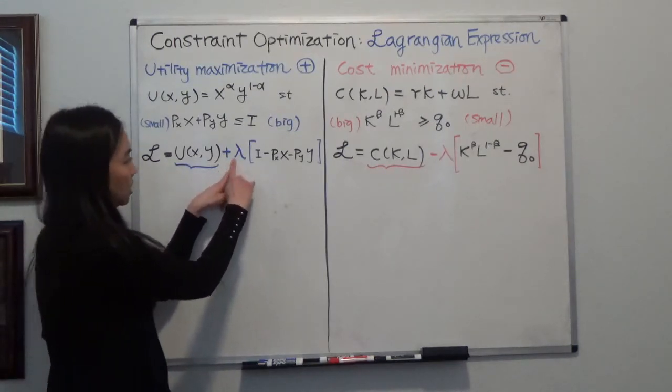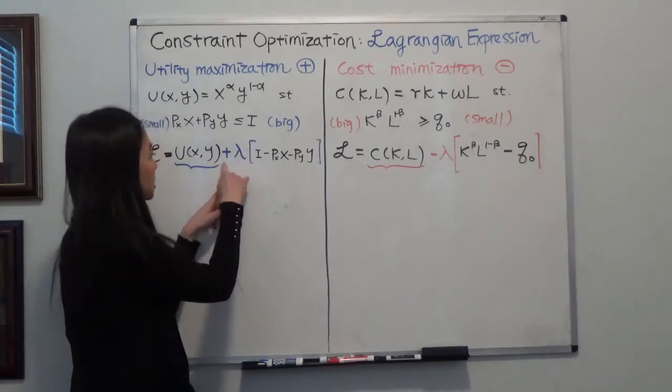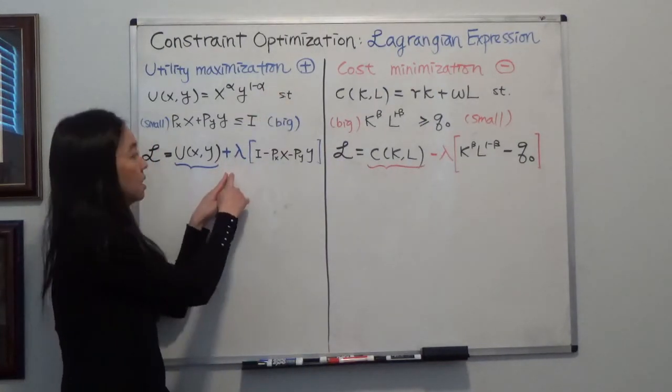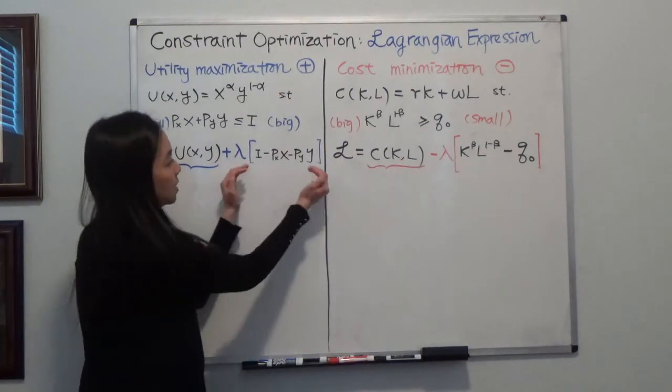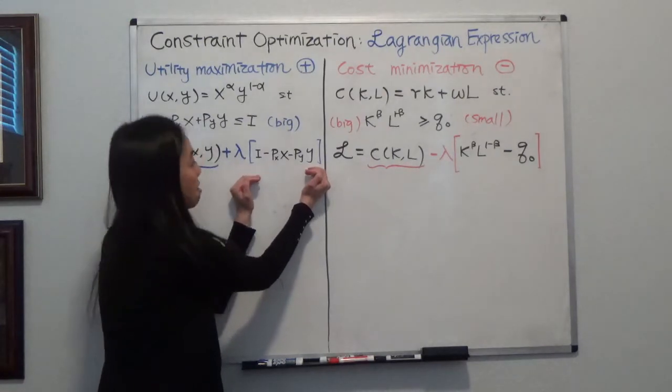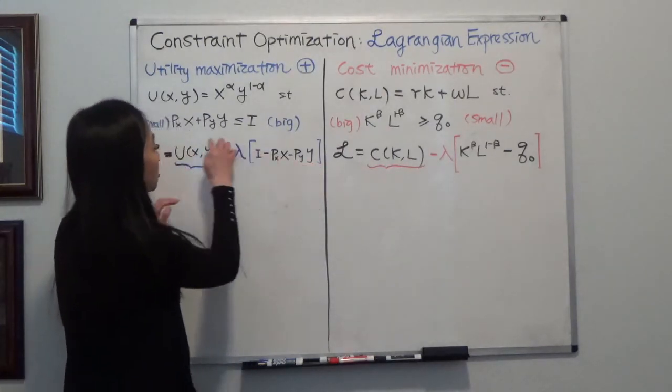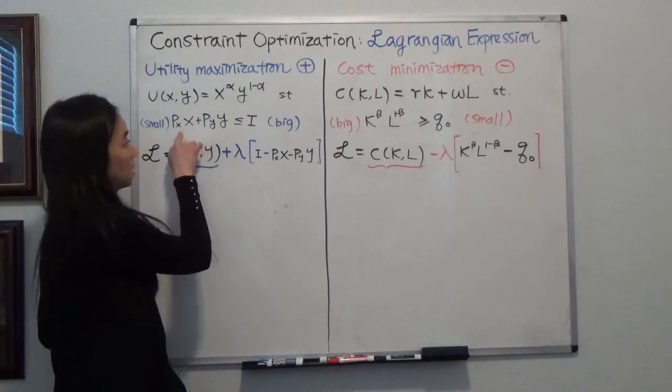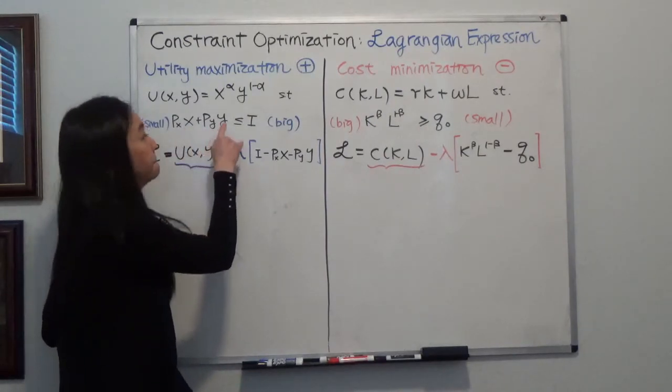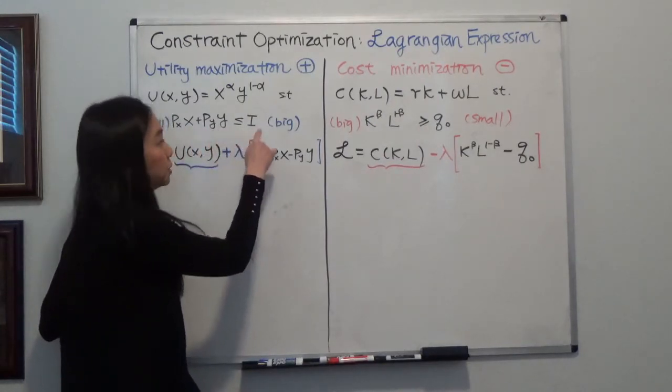plus your Lagrangian multiplier. Notice it's plus because we're trying to maximize. Your Lagrangian multiplier times your budget constraint. So in your budget constraint, you know that your purchase, PXX plus PYY, must be less than or equal to your budget.